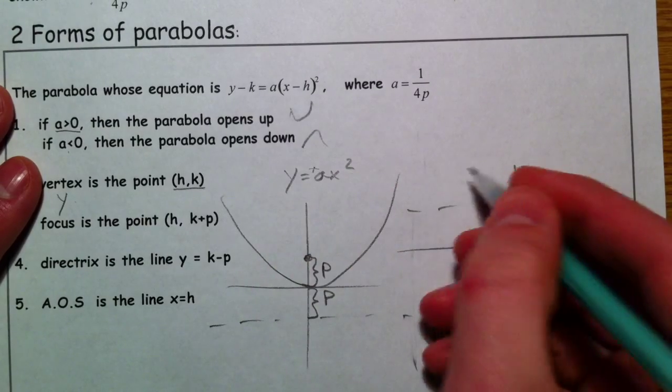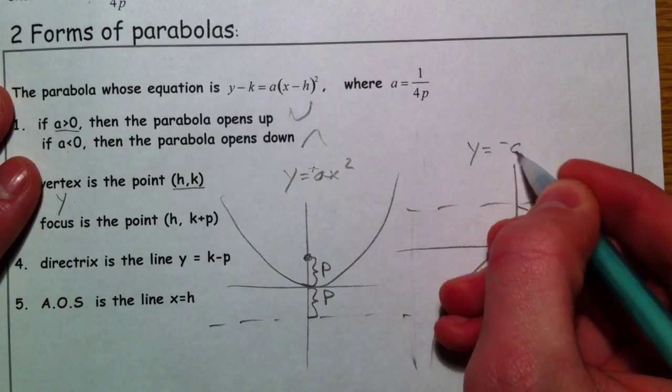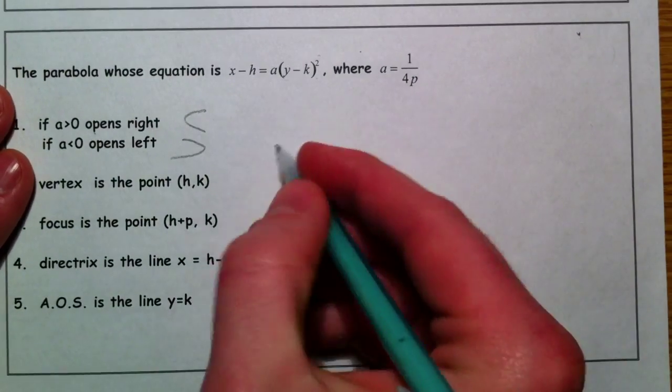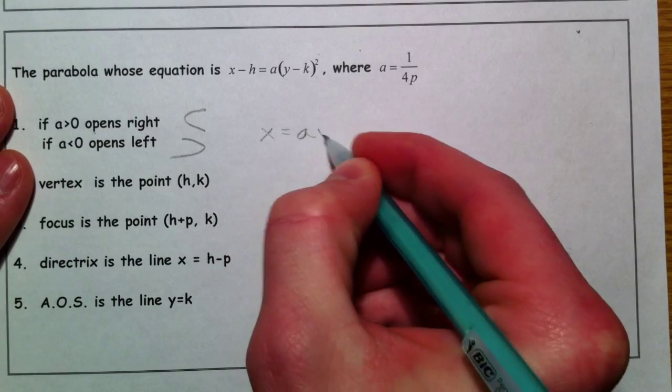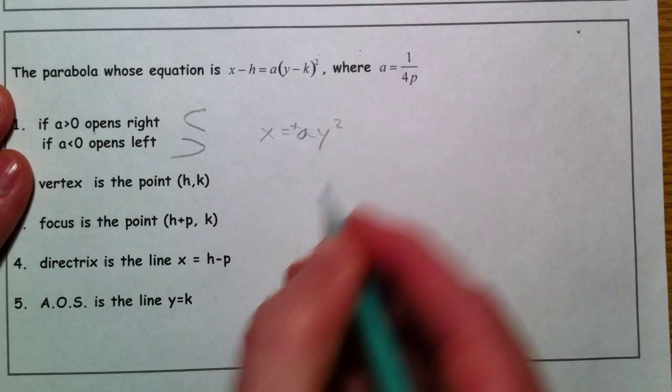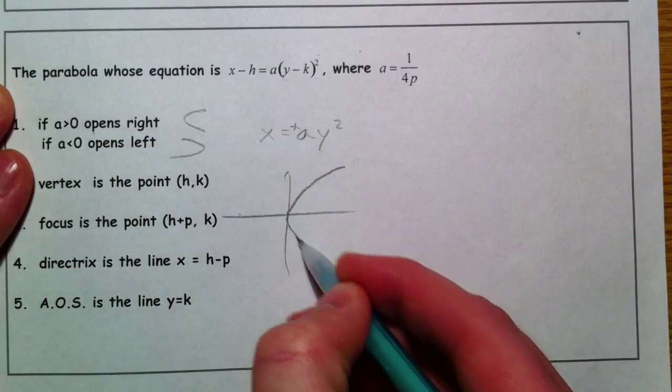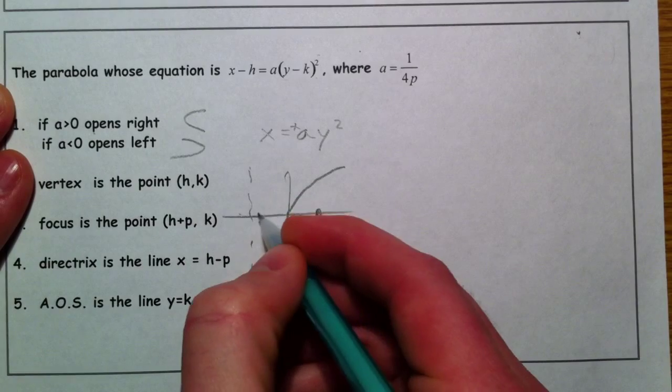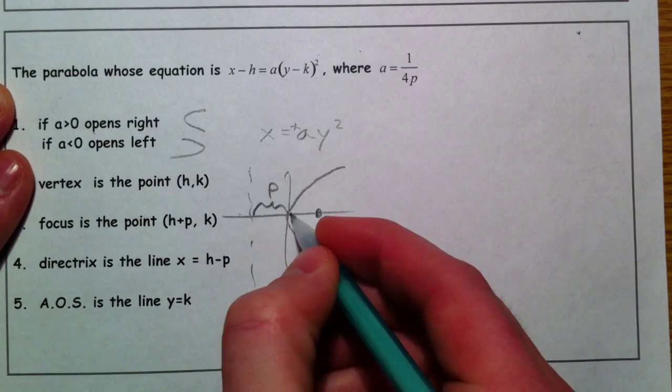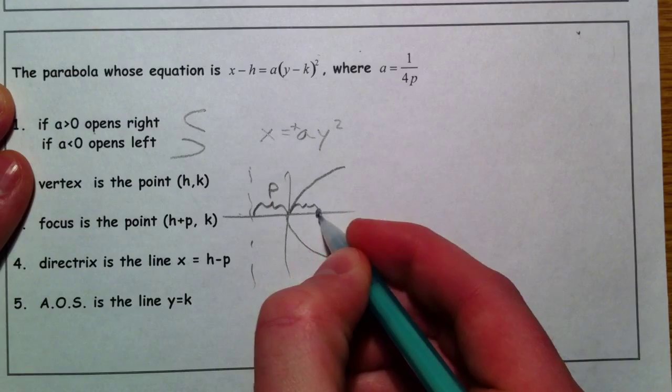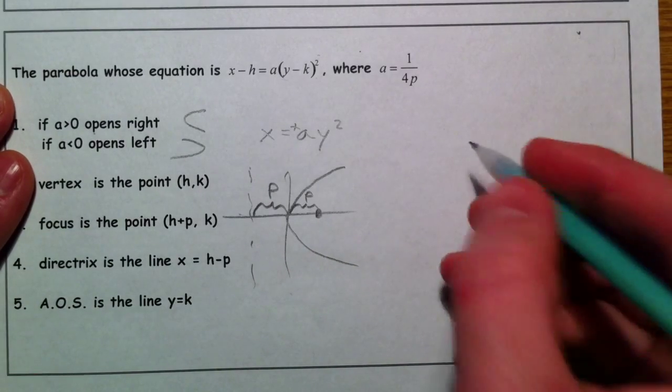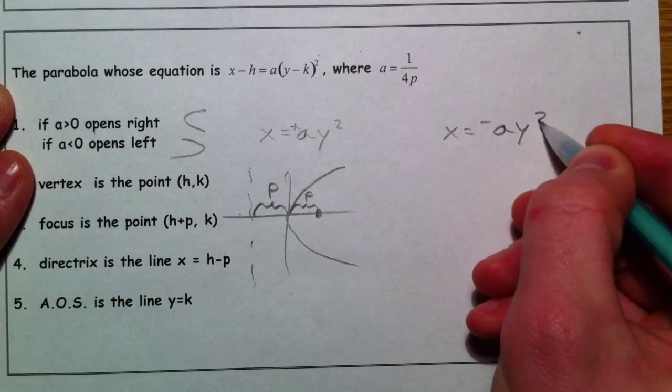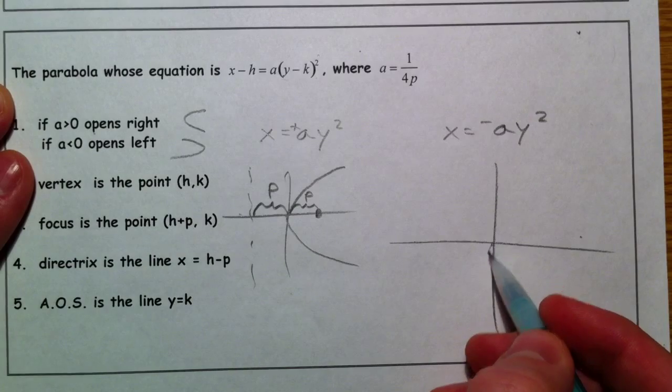Positive ax squared. This is the y equals negative ax squared. If x equals a positive a y squared, it opens to the right. x equals a negative a y squared, and that's when it opens to the left, the negative side.